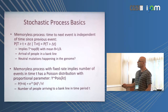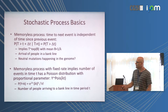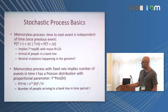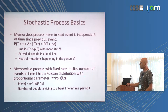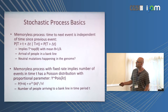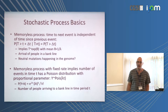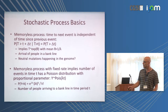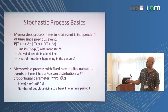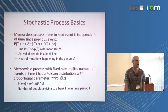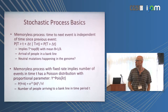If we have a memoryless process with a fixed rate, it implies that if I take some fixed time t, the number of events in that time has a Poisson distribution with parameter proportional to the time that has passed — one over theta times the time. So instead of waiting time, this is the number of people arriving at a bank line in a 10-minute or hour period. So we have a Poisson process.